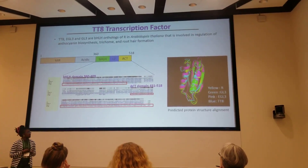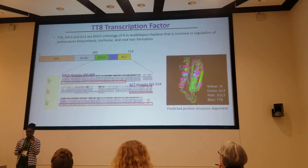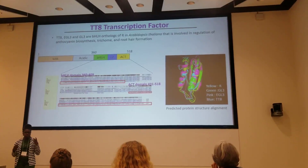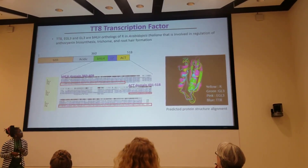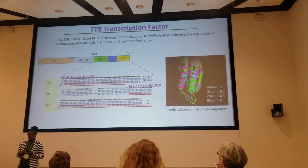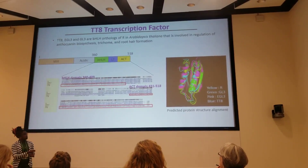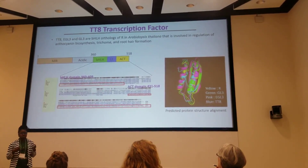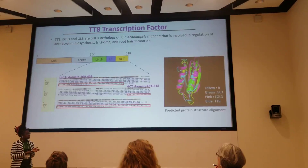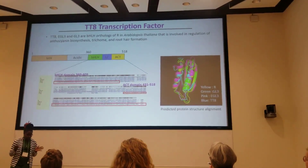I was particularly interested in TT8 because the phenotype of Arabidopsis seeds is brown, and TT8 is responsible for proanthocyanin accumulation, which is the compound that accumulates in the seed coat. Looking at the entire C-terminal region of TT8, GL3, EGL3, and R, there is little consensus in the amino acid sequence. However, by looking at the general structure of the four proteins, there seems to be a very close structural relationship. This is the predicted protein structure alignment we have for the four transcription factors.